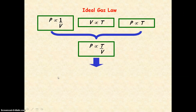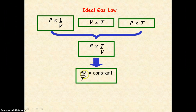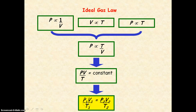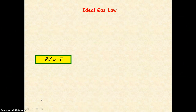The ideal gas law states that if we rearrange, pressure times volume divided by the temperature of the gas will equal a constant. So for a fixed mass of gas, if pressure changes from P1 to P2, volume from V1 to V2, and temperature from T1 to T2, then P1V1 divided by T1 will equal P2V2 divided by T2, because both equal the same constant. The ideal gas law says the product of pressure times volume is directly proportional to temperature.